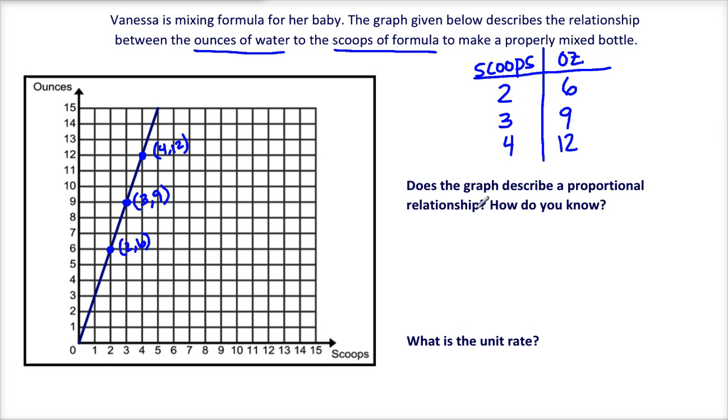Let's use this table to help us answer these questions. Does the graph describe a proportional relationship, and how do you know? You might have to go back a couple lesson videos if you forgot what proportional means, but I'll remind you here. Proportional means that my two units have the same or a constant ratio. A ratio is just a fancy word for a fraction. So let's set up a couple fractions and make sure that they're all the same.